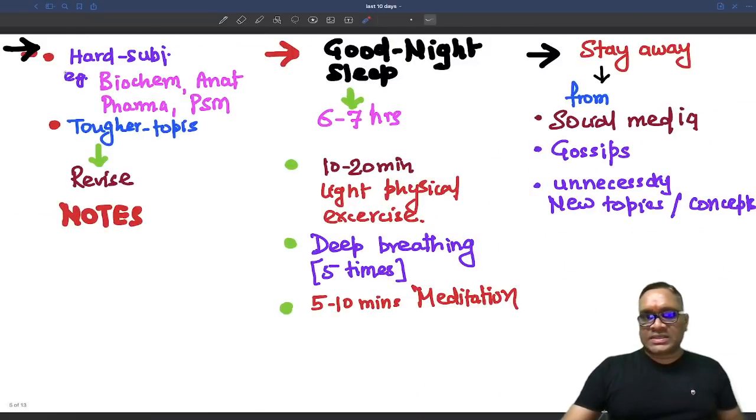Apart from all these things, try to focus on the harder subjects like biochem, anatomy, pharma and PSM. Because you tend to forget many fact-based things from here and there will be more questions from here. So try to target the tougher topics also from the other subjects also. And that is all from your notes based on the previous year question from the NEET and AIIMS exam.